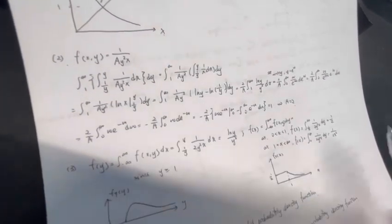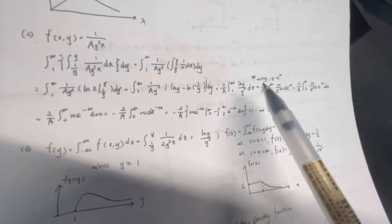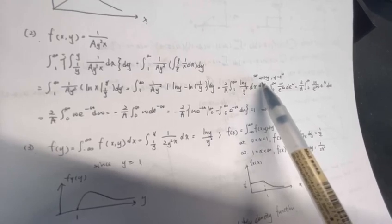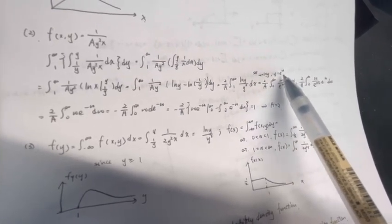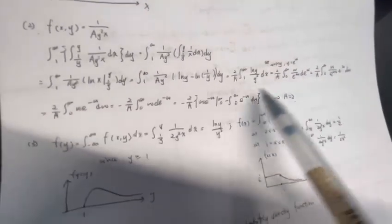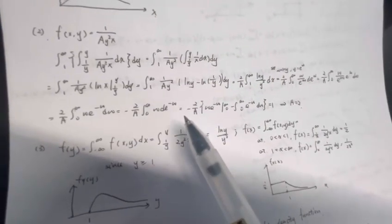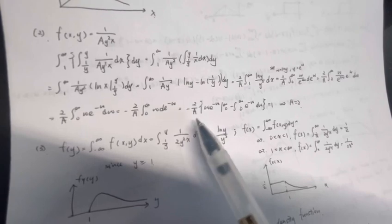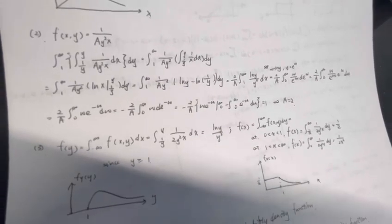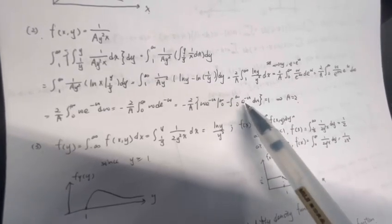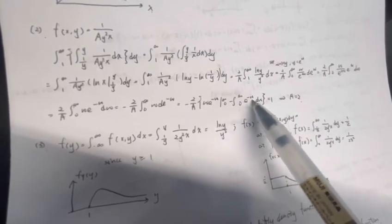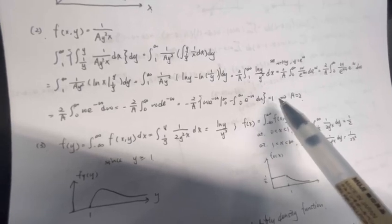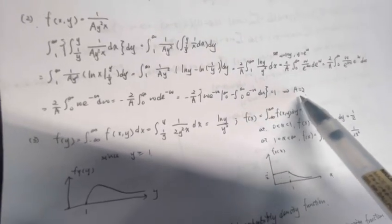We calculate this integral. In the process, we set w equal to ln(y), so that y equals e to the power of w. Finally, we get that this equation equals minus 2 divided by a times w times e to the power of minus w, evaluated from infinity to 0, minus the integration from 0 to infinity of e to the power of minus w dw, which equals 1. So we get the final answer that a equals 2.